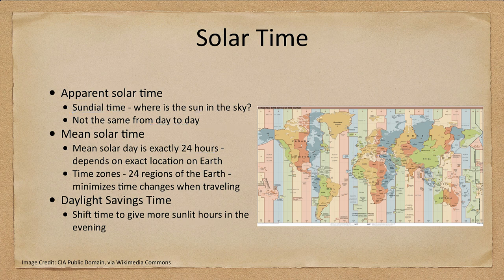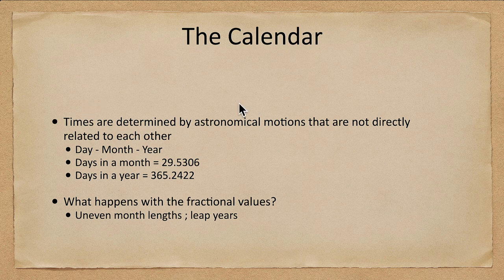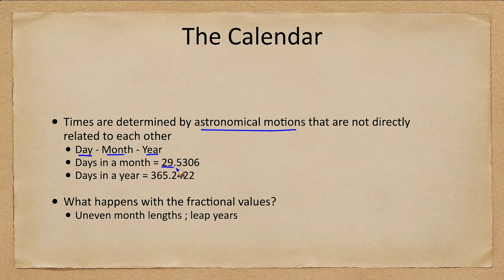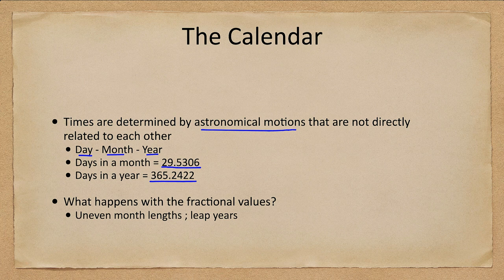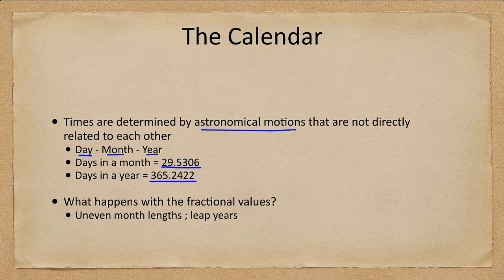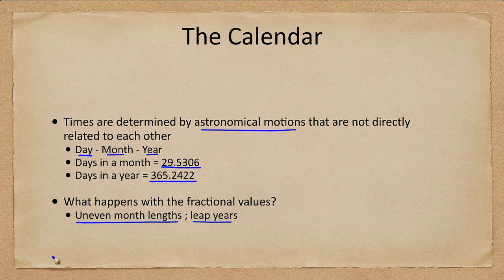So let's go ahead and look at the calendar now. The calendar becomes difficult because it is based on astronomical motions that are not related to each other. So for example the day, month and year, there are 29.5603 days in a month and 365.2422 days in a year. Because one is based on the rotation of earth, one is based on the orbit of the moon around earth and the other is based on the orbit of earth around the sun, there's no reason that these are going to be exact numbers of days. So we end up with months of uneven lengths and leap years because nothing ever fits together quite right.